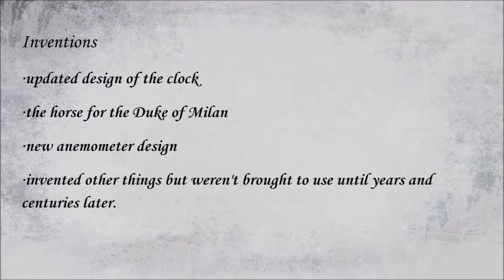Leonardo da Vinci didn't create the clock — he just made a more accurate version of it. This clock had two different mechanisms: one for hours and one for minutes. This clock could also keep track of moon phases.